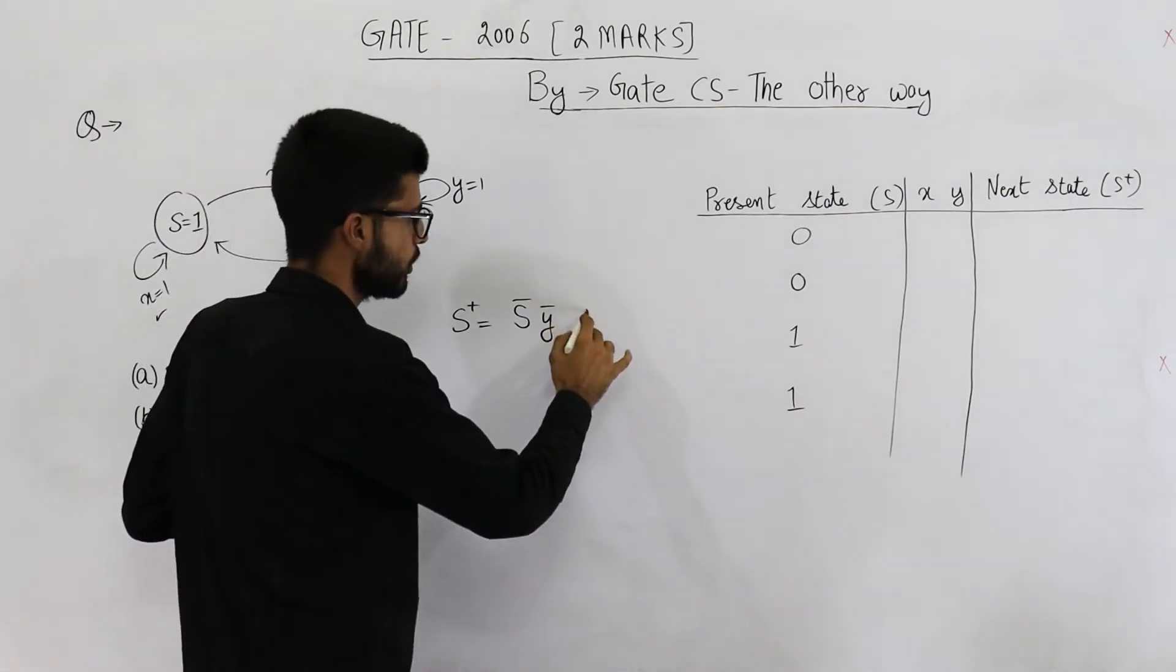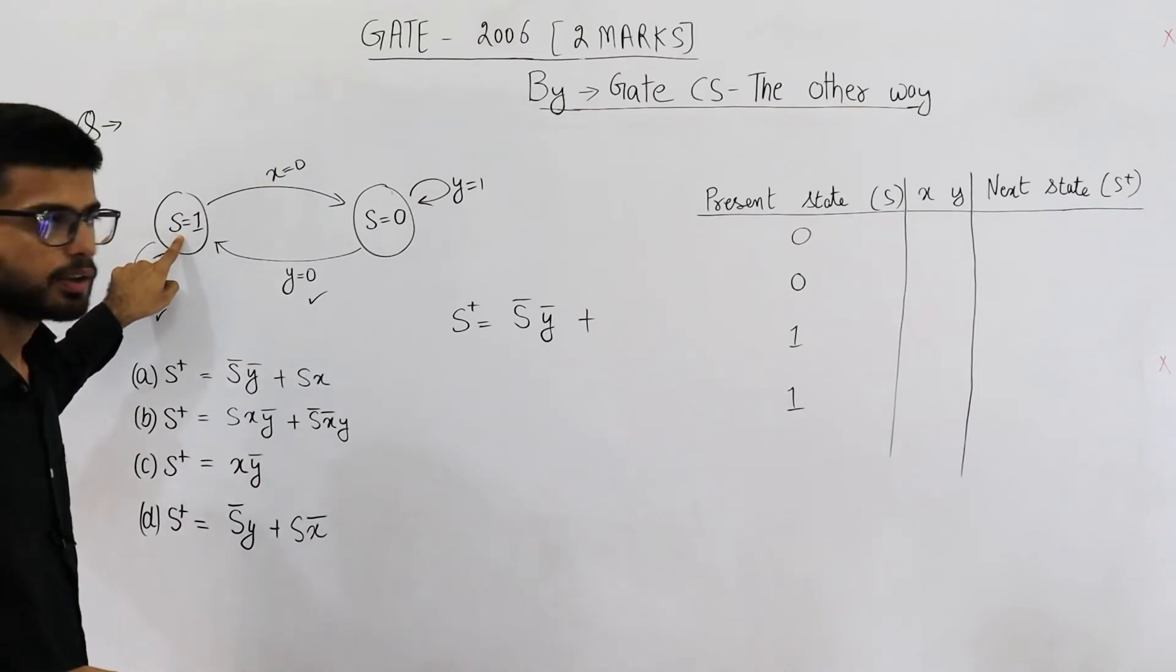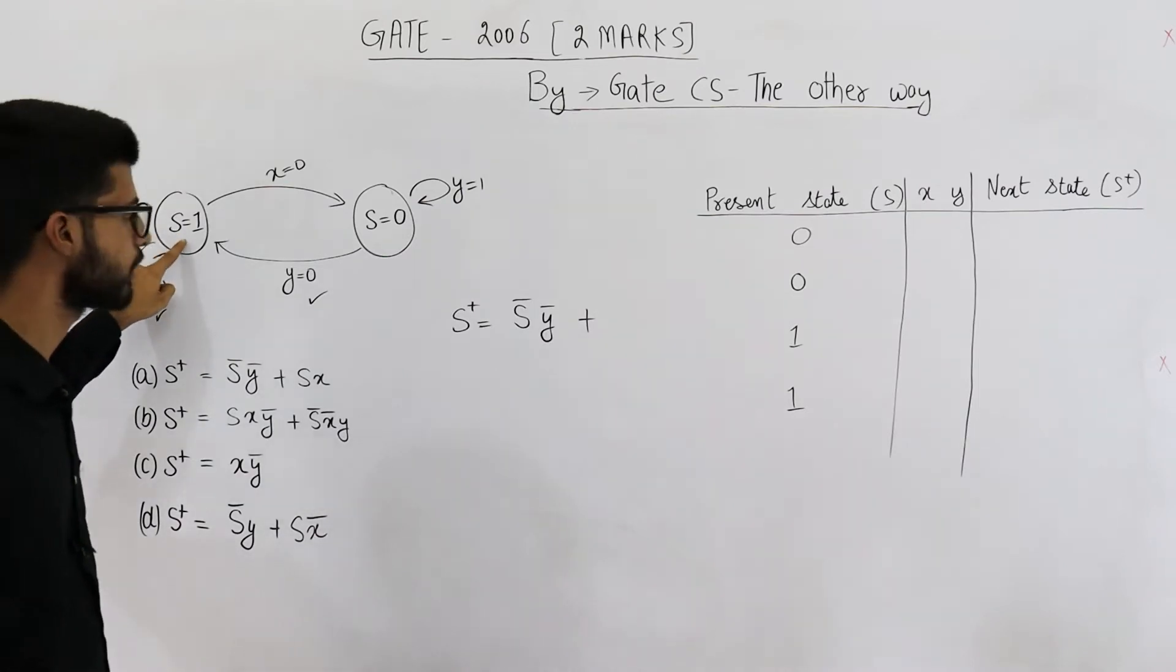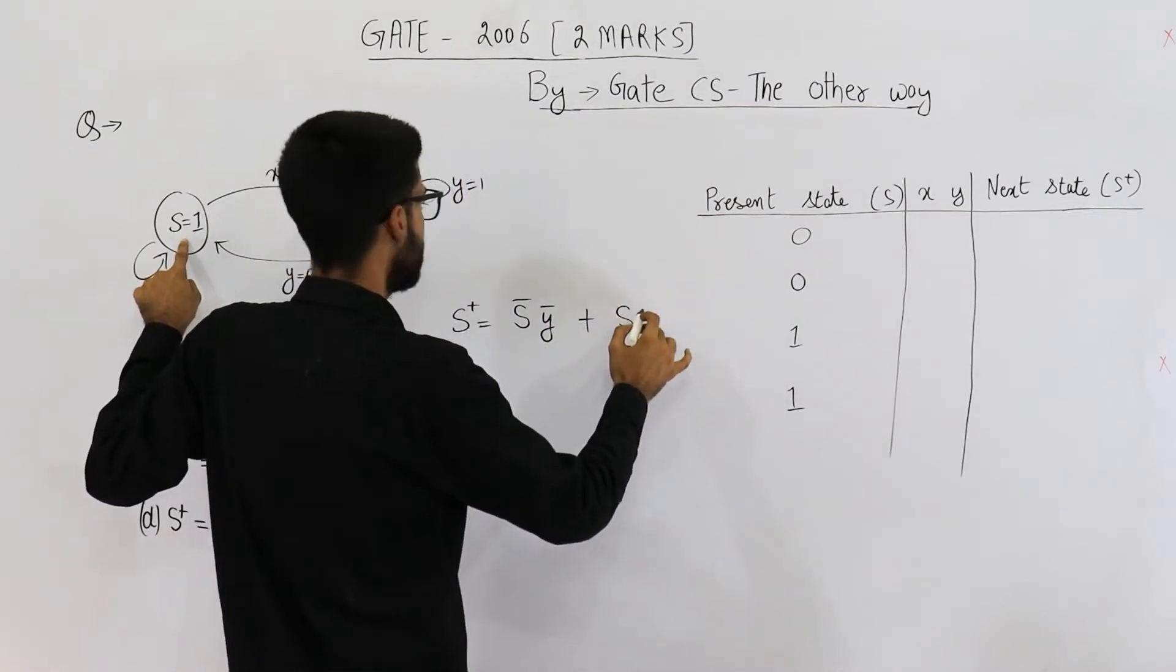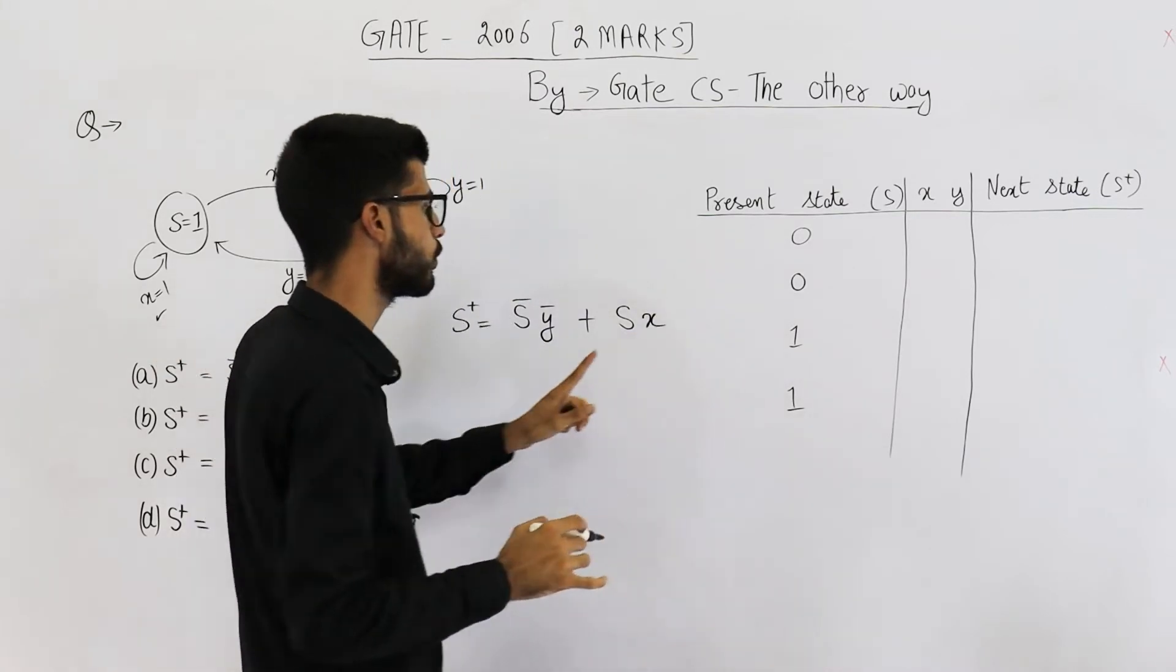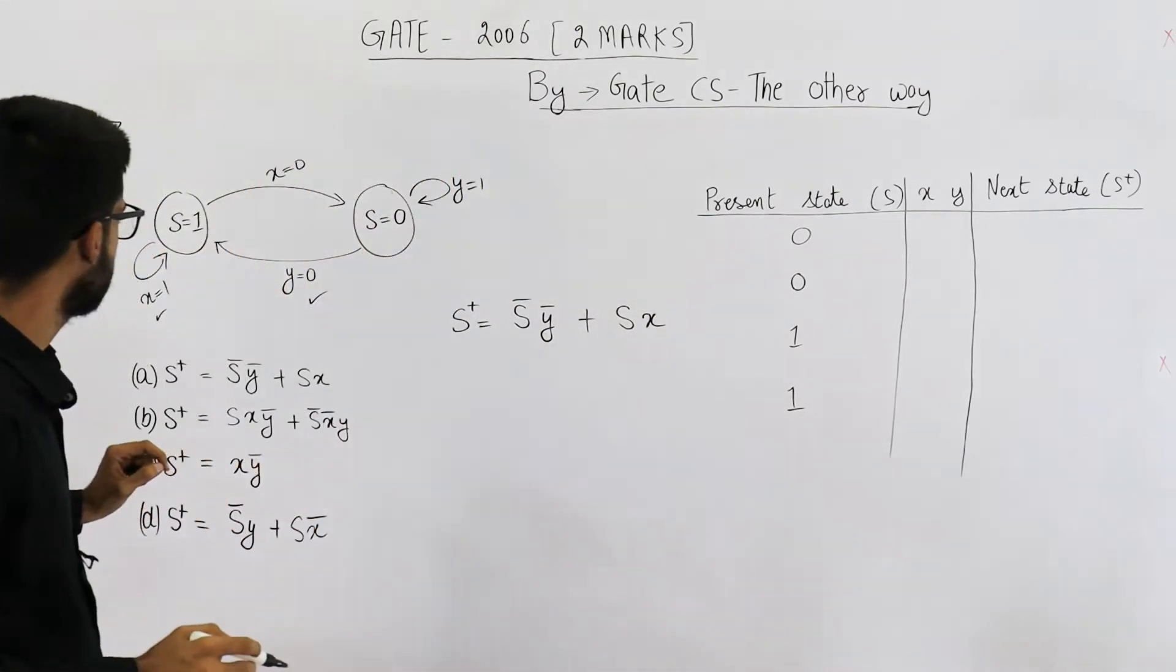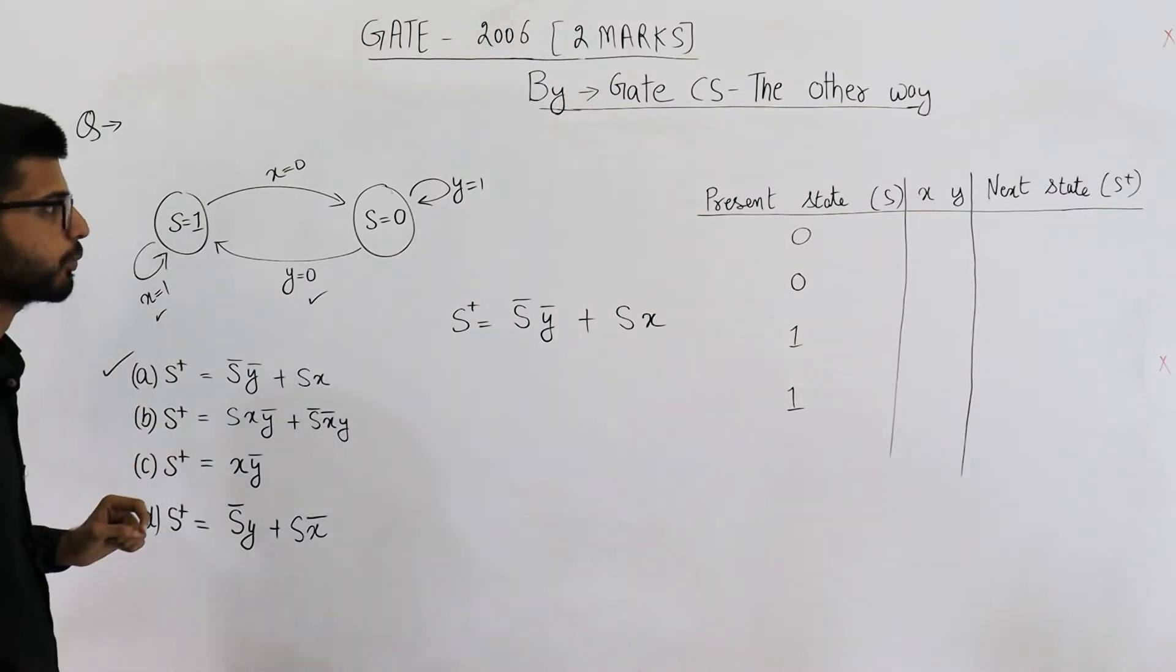Or second choice is currently we are at state 1 only and this transition is taken. Currently we are at state 1 means s, don't put a bar here and this transition is taken means x is equal to 1. So don't put a bar here as well. So option a matches, that means answer is option a.